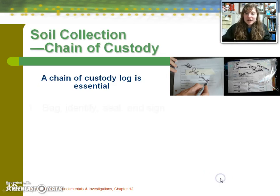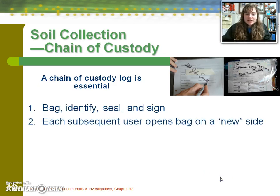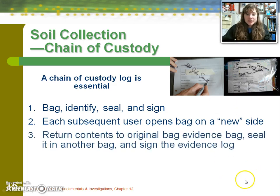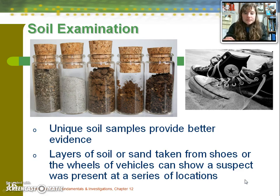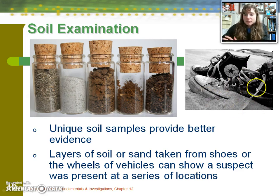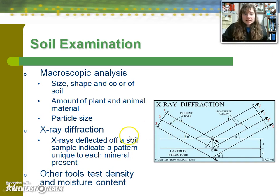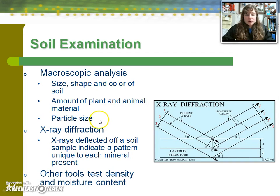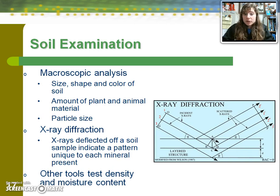As with all forensic evidence, chain of custody is really important. Sand or soil evidence would be bagged, identified, sealed, and signed across the seal. Unique soil samples provide more helpful evidence, and that evidence can be taken from shoes, clothing, vehicles, and so forth. In examining collected soil, it's helpful to look with the naked eye to notice size, shape, color, the amount of organic matter, and particle size. X-ray diffraction is also a valuable tool, where X-rays deflect off of the soil in a unique way based on the minerals present.